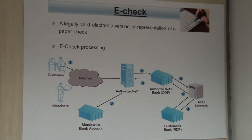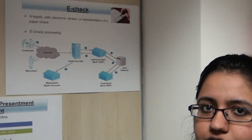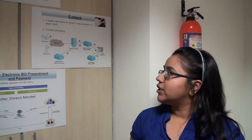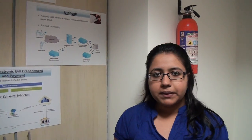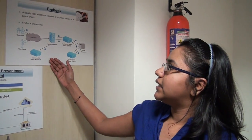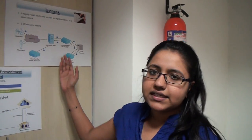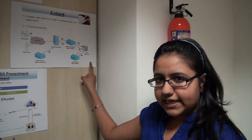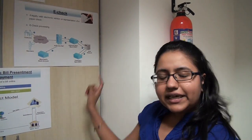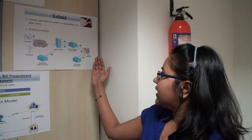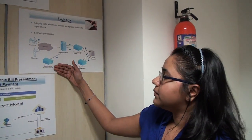Electronic check is an electronic version of physical check or paper check, which we have today. Actually, in the case of paper check, it takes a lot of time, more than 30 days of processing. So they have come up with electronic check processing, in which everything is done electronically. The main part over here is ACH, that is Automated Clearinghouse, which does the settlement between the buyer and the merchant.